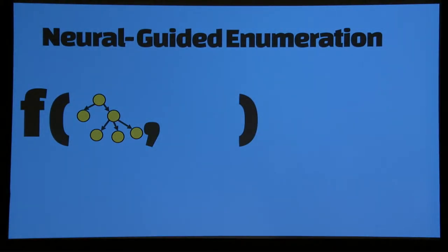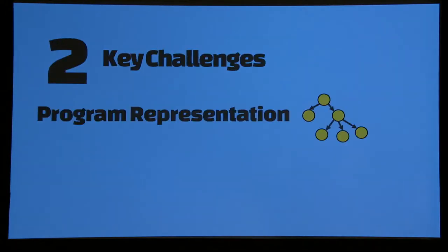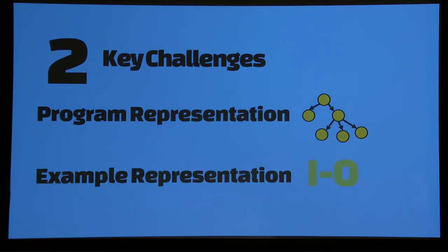Now our problem becomes something like this. We want to learn a function that takes a partial program tree and set of examples and expands the tree by one node at a time. Then you can apply this iteratively to generate the full program. There are two main challenges here. How do we represent programs in vector spaces? And how do we represent examples? There are many design decisions.